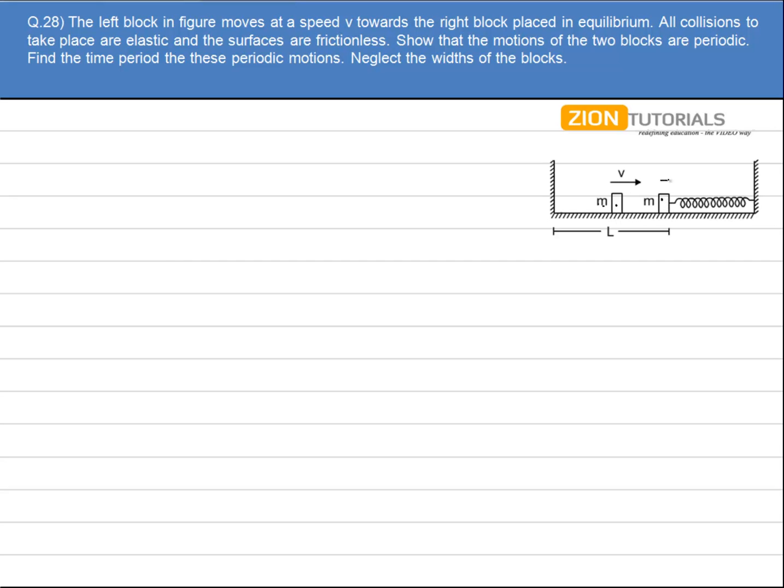Now this block will move with a velocity v. It will get compressed. It will come back to its position where the block mass small m is already present. Again collide. Again this block will transfer its velocity v to this block. This block will travel a distance L, then take an elastic collision.